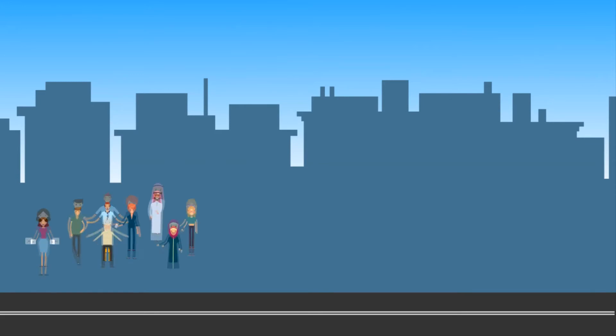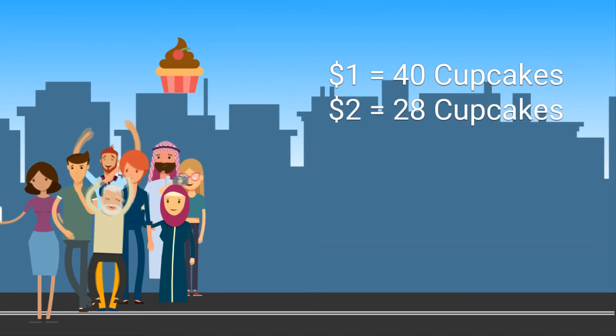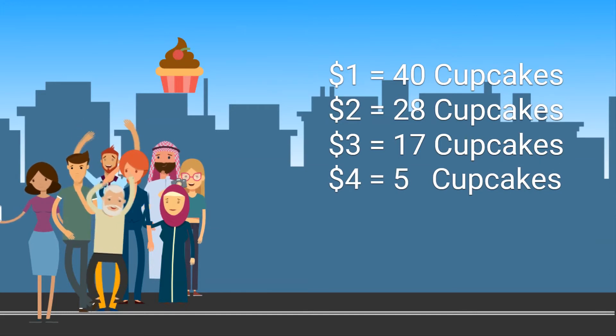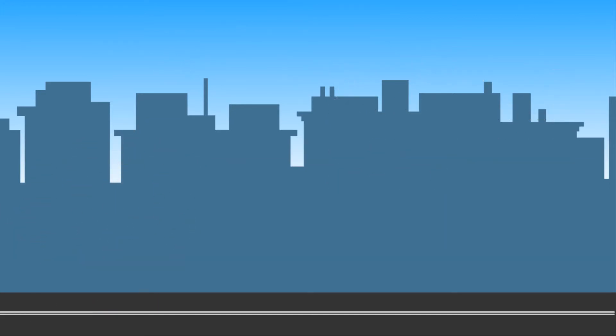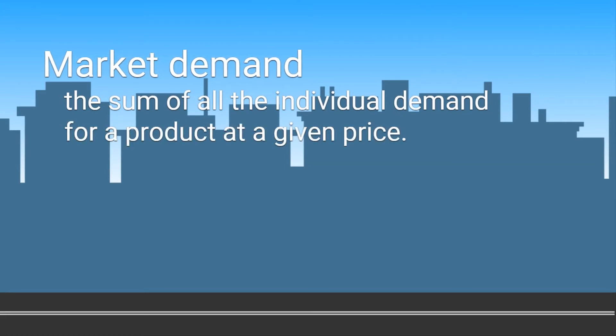But this is different to market demand. In this example, at one dollar a cupcake, the market is willing and able to buy 40. But this reduces to five cupcakes as the price increases to four dollars. Market demand is the sum of all the individual demand for a product at a given price.